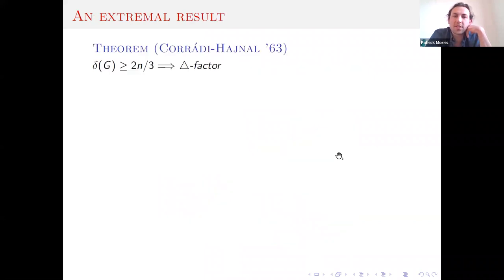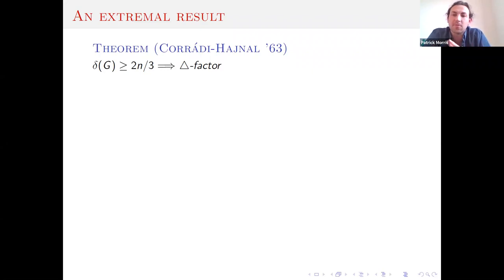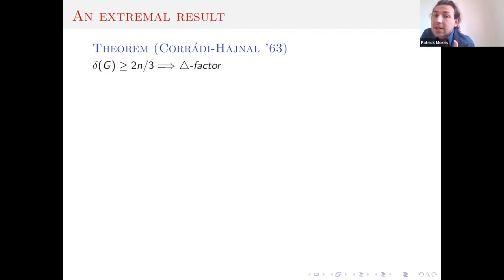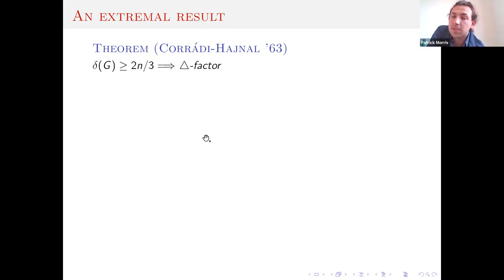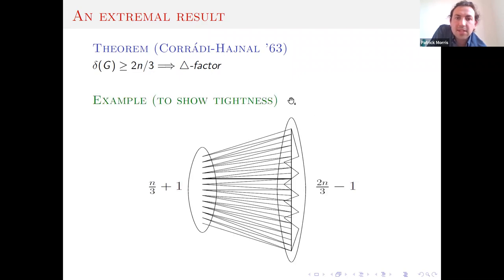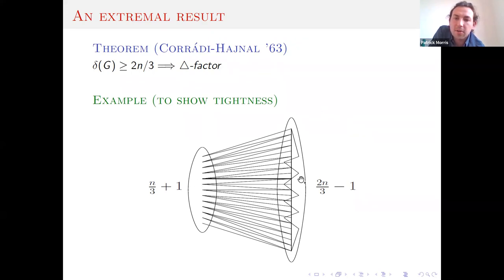Given that it's hard to determine whether a graph has a triangle factor, we look for simple, easy-to-verify conditions that guarantee a triangle factor. The classic extremal result in this area is that of Corradi-Hajnal, which gives a minimum degree condition guaranteeing a triangle factor. Here n is the number of vertices and delta is the minimum degree. This bound is tight, as can be seen by the following example.